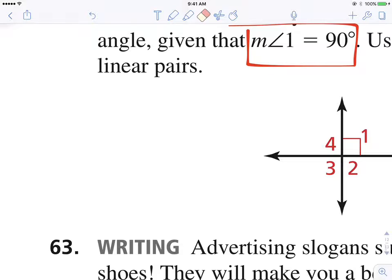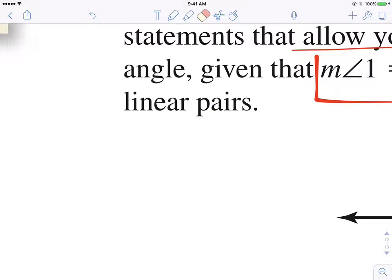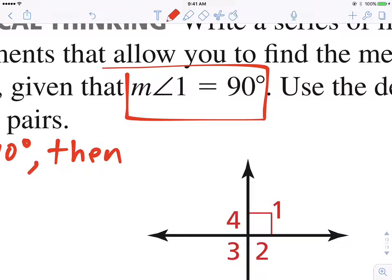So if they are linear pairs, this is what we know. So if the measure of angle one is 90 degrees, then the measure of angle two must also be 90 degrees.